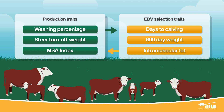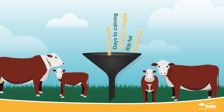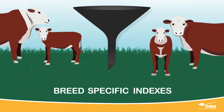To maximize productivity and profitability, and to take the hard work out of balancing these important traits in your breeding objectives, most breeds have packaged EBVs into selection indexes for profit that relate to typical types of commercial production systems.